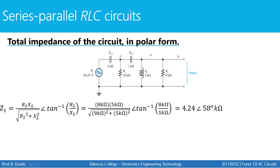The parallel combination of XL and R2 is called Z1. We combine them using the formula for a parallel inductor and resistor, giving an impedance of 4.2 kilohms at an angle of 58 degrees.